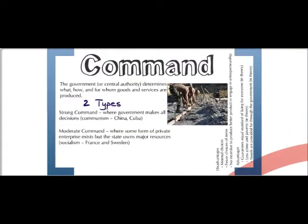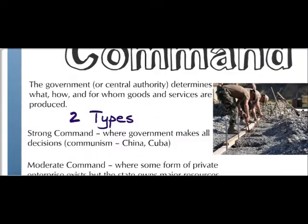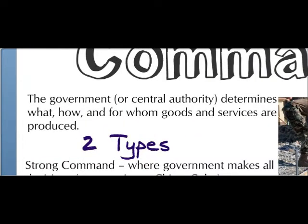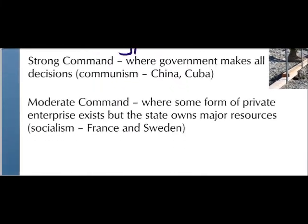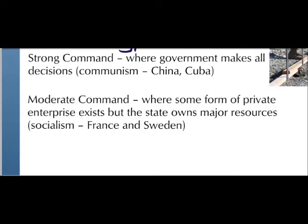The next kind of economy is a command economy. In a command economy, the government or central authority determines what, how, and for whom goods and services are produced — the government makes all the decisions. There are two types: a strong command economy where the government makes all the decisions, such as communism — China, Cuba, the former Soviet Union. In a moderate command economy, some form of private enterprise exists but the state owns major resources — this is socialism, with France and Sweden as examples.